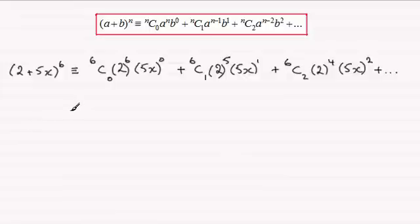So what's this identical to? Well, 6C0, anything C0 is always 1, you can check it out on your calculator if you like. 2 to the power 6, well that's going to be 64. 5x to the power 0, anything to the power 0 is 1, so you just got 64 here for the first term.